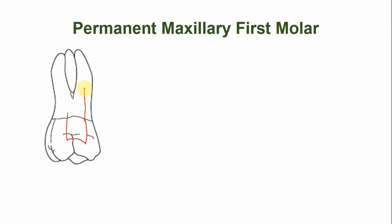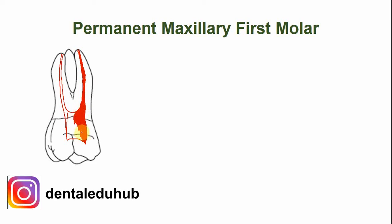This is the mesial root and the mesial canal. This is the distal root and the distal canal. The floor of the pulp chamber is slightly below the cervical line. The mesial canal has a slight curvature. The shape of the pulp chamber is a bit square. The distal canal has very little curvature — it is nearly straight.